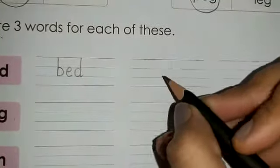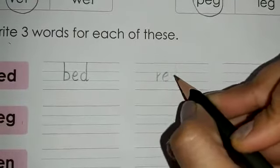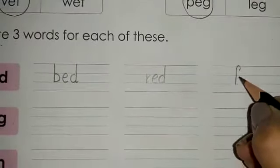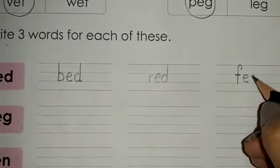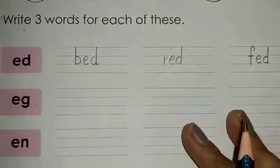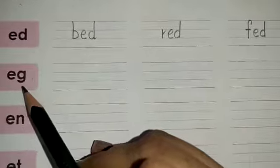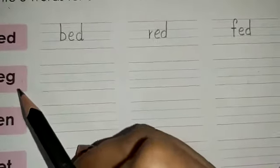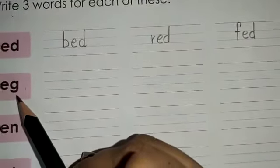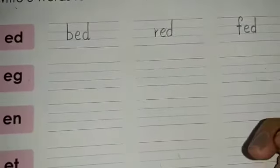The next word is red, R-E-D, red. And the next word is fed, F-E-D, fed. Now moving on to the next cluster — E-G. Tell me three words from the E-G cluster.